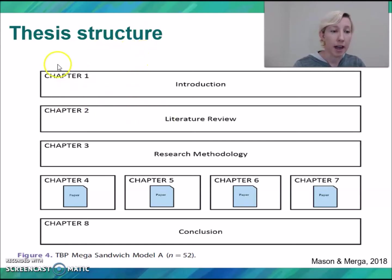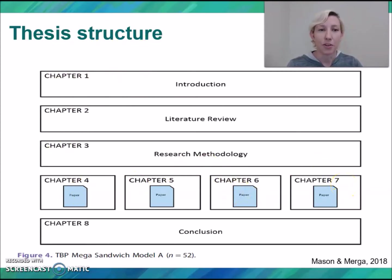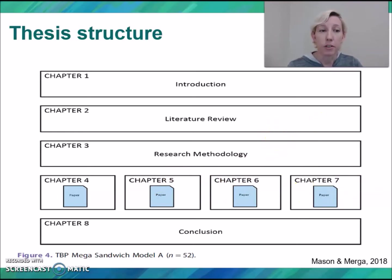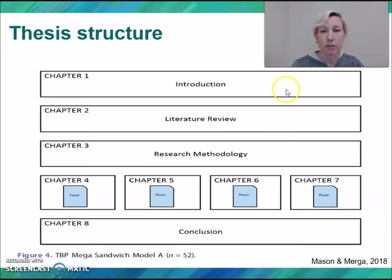While you might have a literature review in each of your papers, you're limited in what you can include in a journal article, which has quite strict word limits — so this is an opportunity to fill in the gaps. Also, with the research methodology, you might have different methodological approaches in your different papers, but you would use the methodology chapter to explain how the design of the study as a whole fits together, something you wouldn't be able to do in the individual papers.